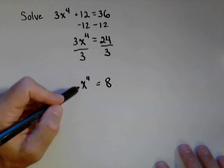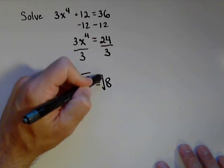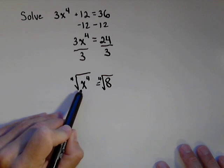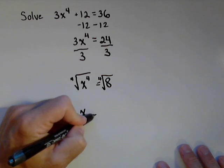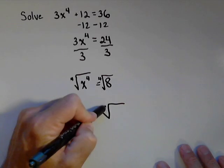Now we're going to conclude by taking the fourth root of both sides. So what we have is that x equals the fourth root of 8.